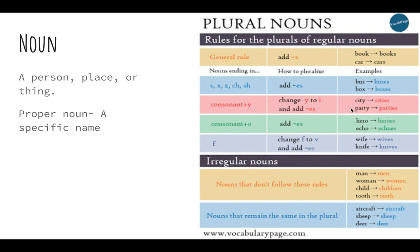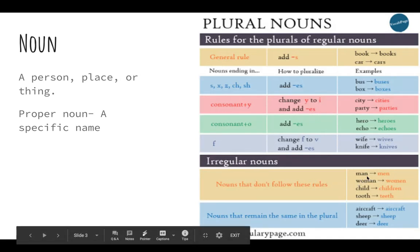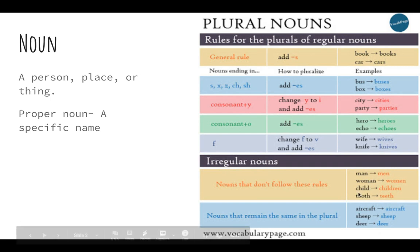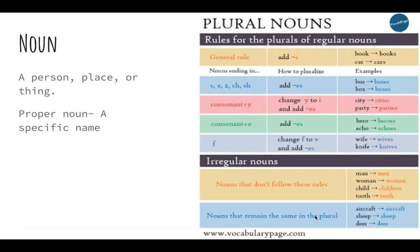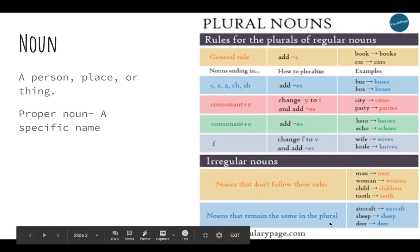If there's a consonant and an O on the end — and those are a little more rare — you add E-S. Hero, echo — you add E-S to those. And if the noun ends in F, which normally would be F-E, change the F to a V and add E-S. So 'wife' turns into 'wives,' 'knife' turns into 'knives.' Then of course you have irregular nouns: man becomes men, woman becomes women, child becomes children, tooth becomes teeth. And some nouns stay the same — aircraft, sheep, deer. I saw a deer; I saw many deer.